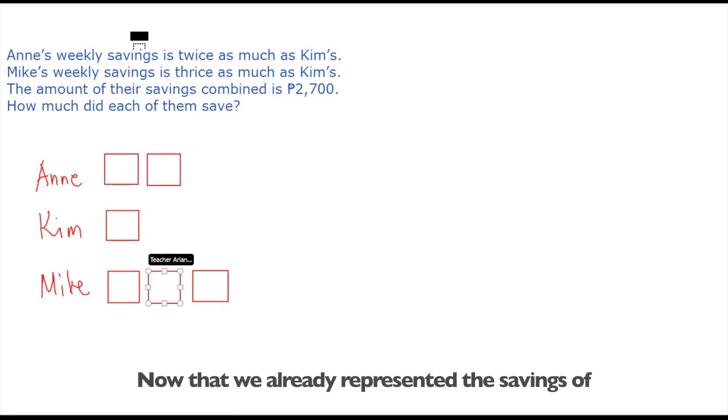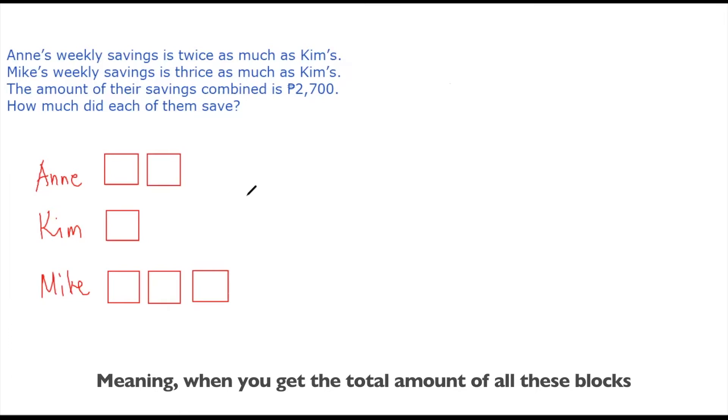Now that we already represented the savings of the three persons involved in the problem, we can proceed with the next sentence. So the next sentence states that the amount of their savings combined is 2,700 pesos. Meaning when you get the total amount of all this blocks, this will be equivalent to 2,700 pesos.